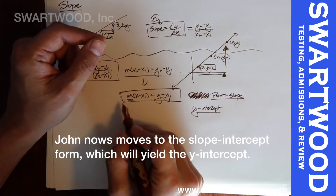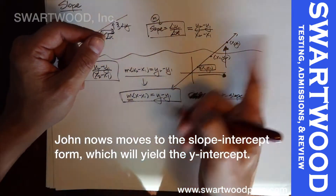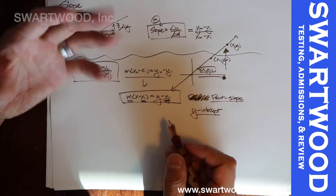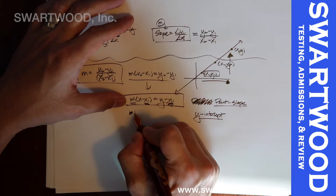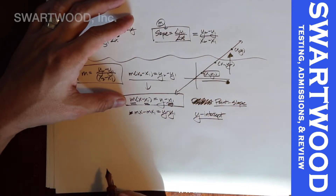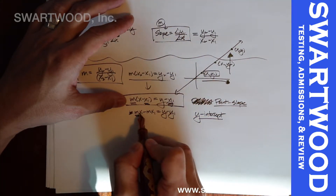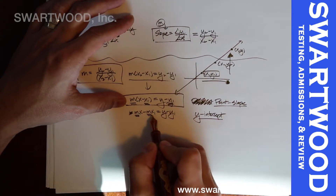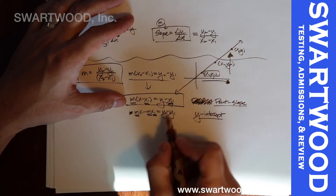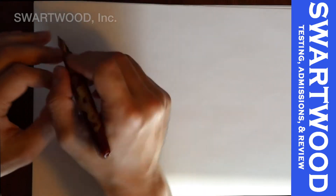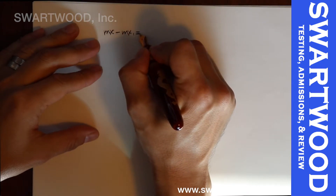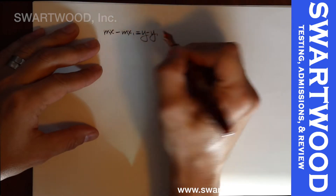To get slope-intercept form, we just play with the point-slope equation. The key is to remember who's allowed to vary and who's fixed. Our special point (x1, y1) is fixed. m is a fixed number, x1 is a constant, y1 is a constant — those don't change. x and y are variables. So we're going to multiply through by m and then collect constants.